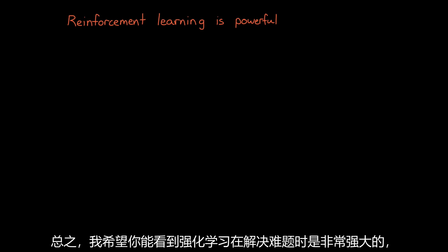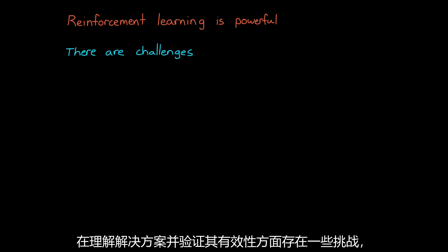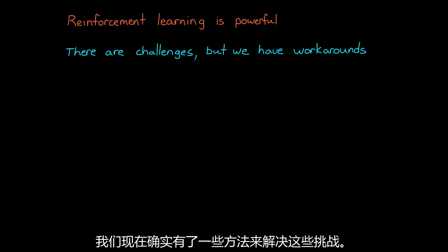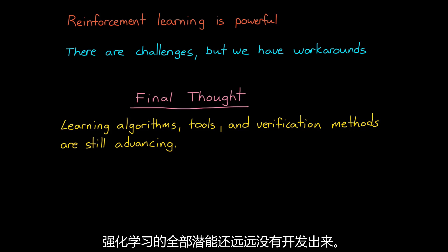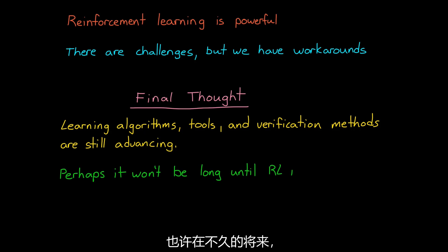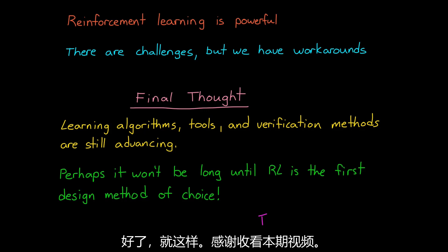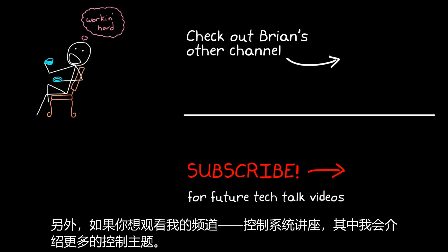Hopefully you can see that reinforcement learning is really powerful for solving hard problems, and that it's definitely worth learning and figuring out how to combine it with traditional approaches in a way that you feel comfortable with the final product. There are some challenges regarding understanding the solution and verifying that it'll work, but we do have a few ways right now to work around those challenges. Learning algorithms, RL design tools like MATLAB, and verification methods are advancing all the time — we are nowhere near reinforcement learning's full potential. Perhaps it won't be far into the future before it becomes the first design method of choice for all complex control systems. Thanks for watching, and if you don't want to miss any future Tech Talk videos, don't forget to subscribe. And if you want to check out my channel, Control System Lectures, I cover more control theory topics there as well.